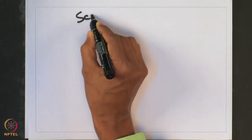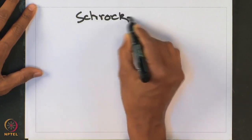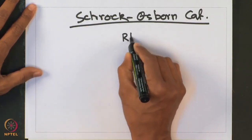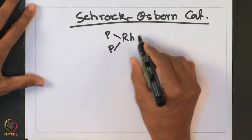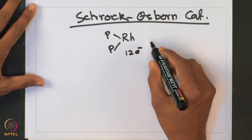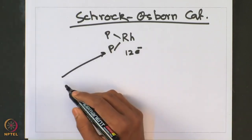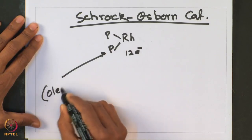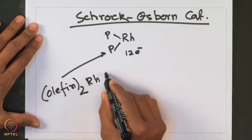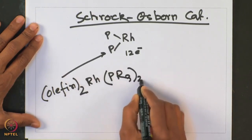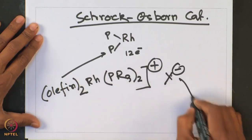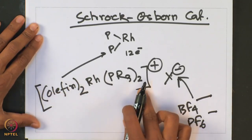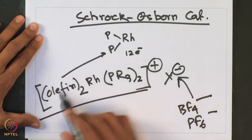The Schrock-Osborn catalyst mechanism: it is a rhodium-based catalyst — a rhodium bisphosphine complex which is a 12-electron species. Initially, this 12-electron catalytic species is generated from a precatalyst where it is a 16-electron complex. Usually we have an olefin-coordinated rhodium species — two olefins — commercially available along with two phosphine ligands bound to it, and it is a cationic species. The anion X⁻ is usually a non-coordinating one, for example BF₄⁻ or PF₆⁻. This rhodium catalyst is commercially available and known as the Schrock-Osborn catalyst.